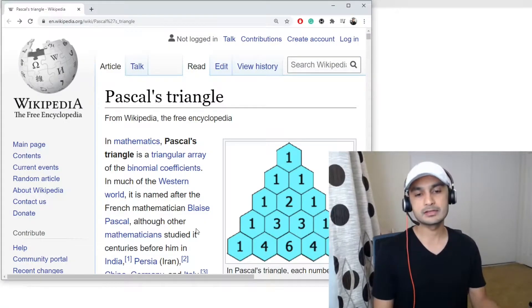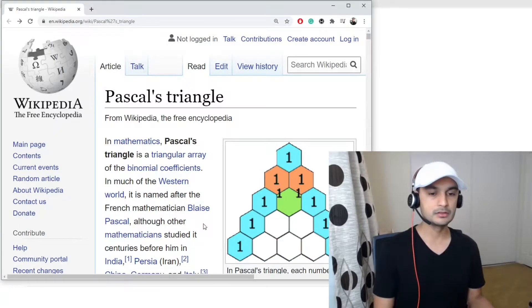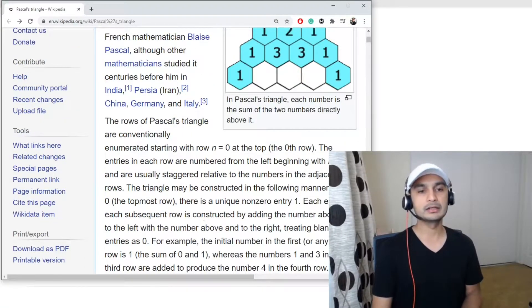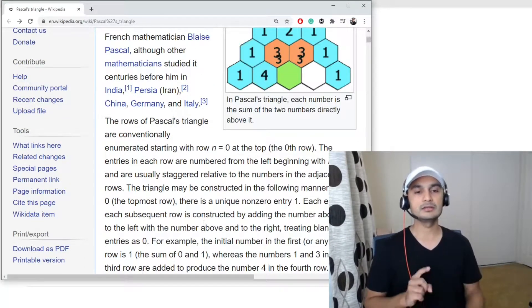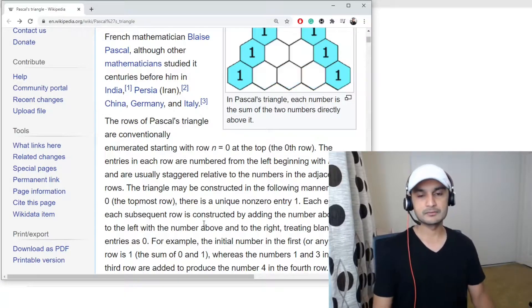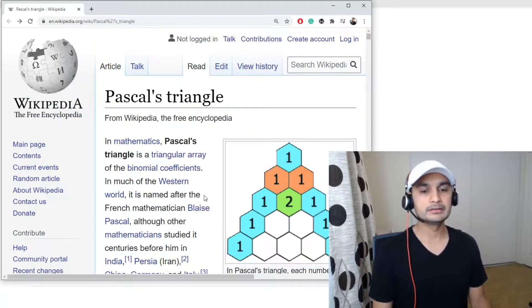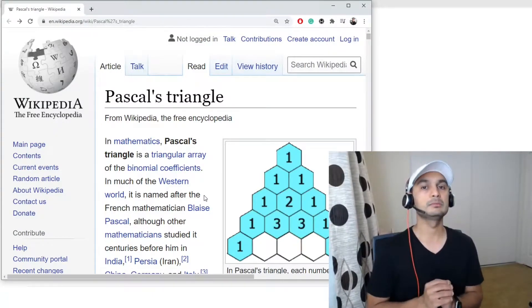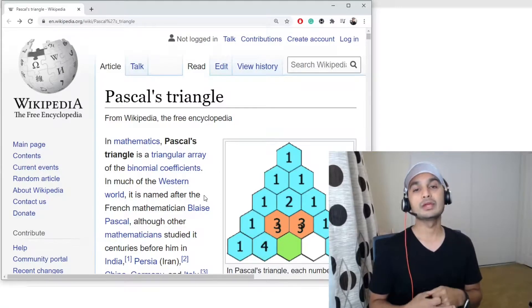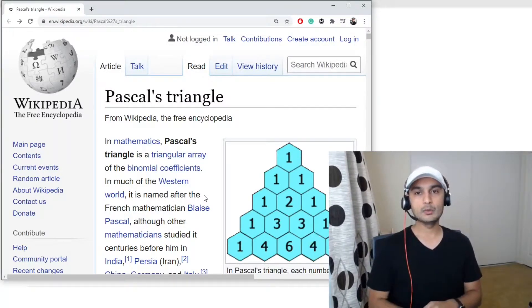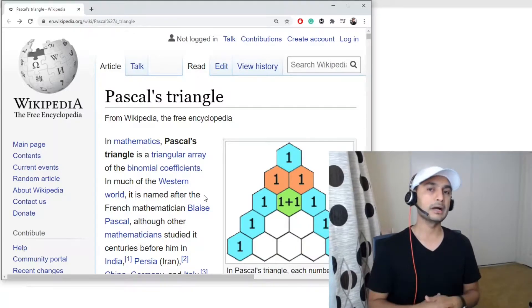You guys can read this article. It was named after French mathematician Blaise Pascal. There were other people using it like Indian mathematicians, Chinese, Germany, Italy, Persia, everybody, but it was just named after him. So it's there on Wikipedia. Now that we understand what Pascal's triangle is, we need to implement it. Let's see how we'll tackle it, how we'll approach it, and then we'll come back and run the code.